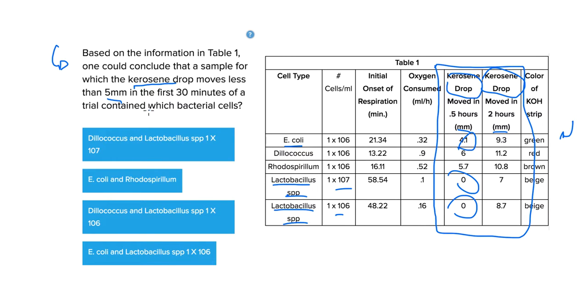Now it's asking in the first 30 minutes of a trial. Here we're looking for when it moved in the first half hour or 0.5 hours, which is equivalent to 30 minutes, whereas here we're looking at how much it moved after two hours. So we're not even gonna look at this one at all, we're only gonna concentrate on this column here.